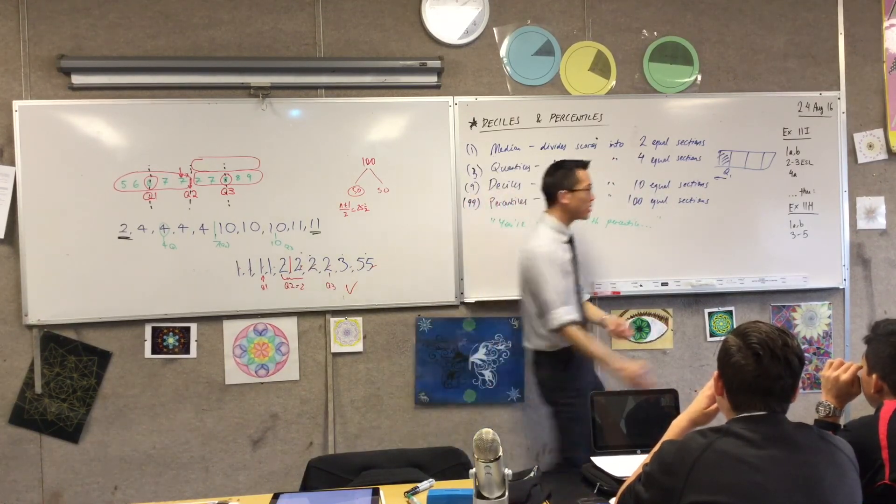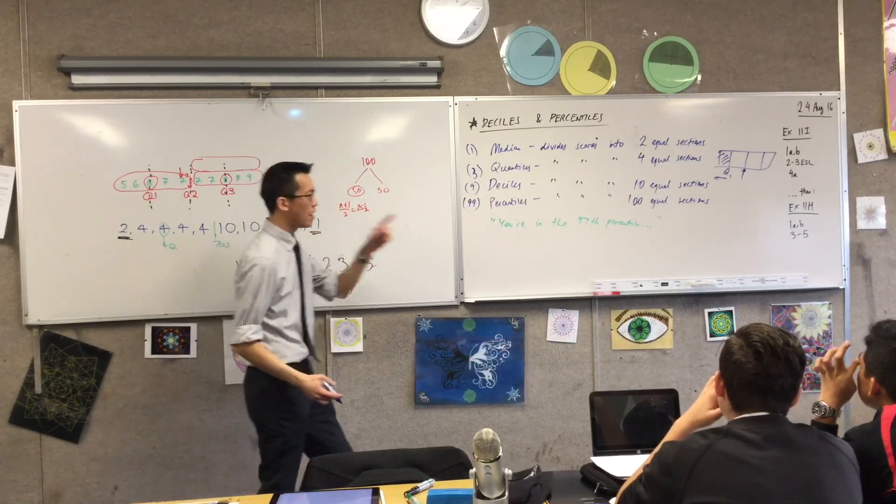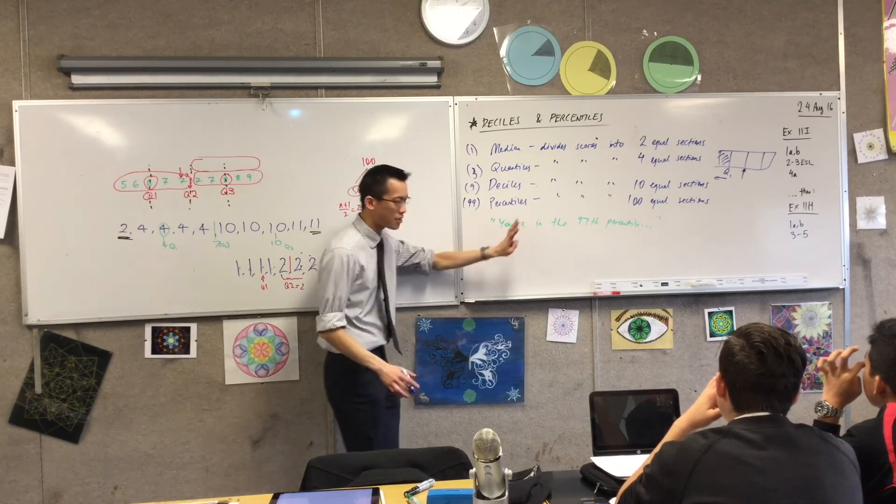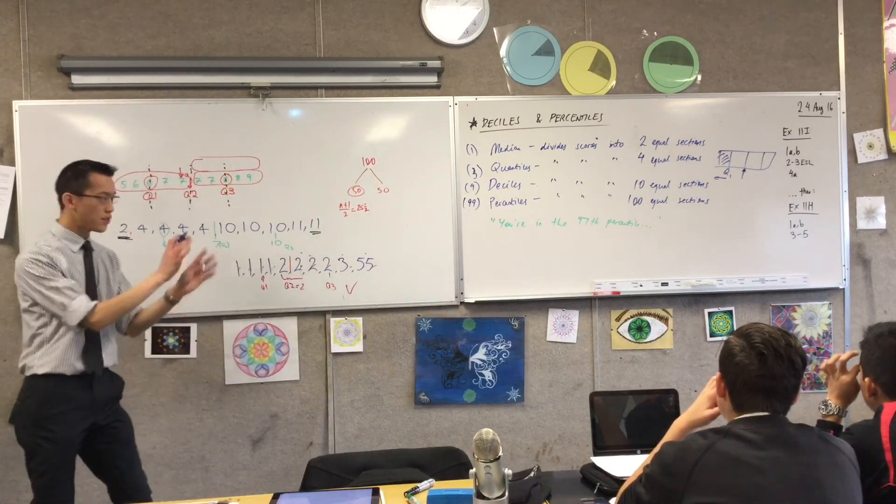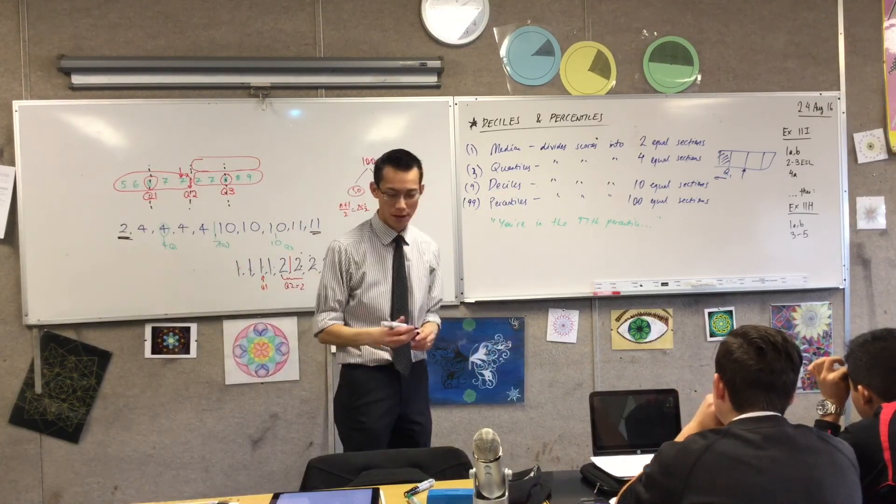If I said you're the median, that means there's going to be 50 percent below you. So now when you think about this, how many people are below you? 97. Okay, good.